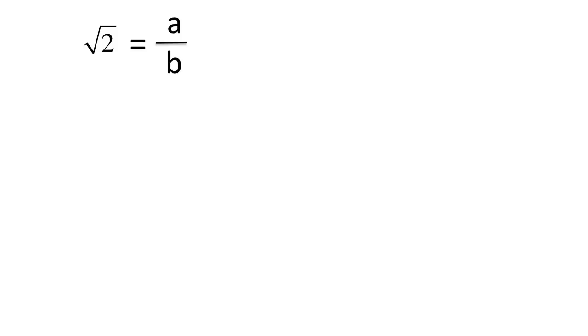Proof 4. Here's another geometric proof. Like before, assume root 2 is a over b in lowest form. Written as 2b squared equals a squared.